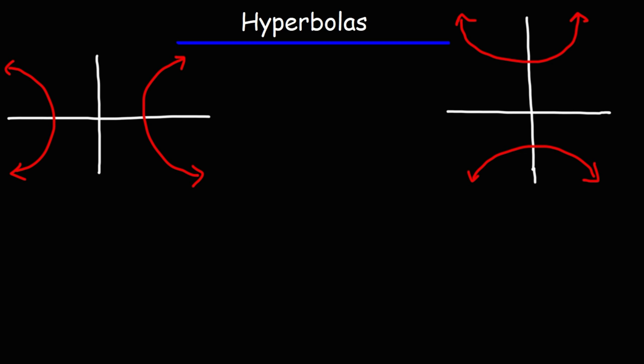We have a horizontal hyperbola on the left and a vertical hyperbola on the right. The formula that corresponds to the horizontal hyperbola is x squared over a squared minus y squared over b squared, which is equal to 1. This is the case when the hyperbola is centered at the origin.